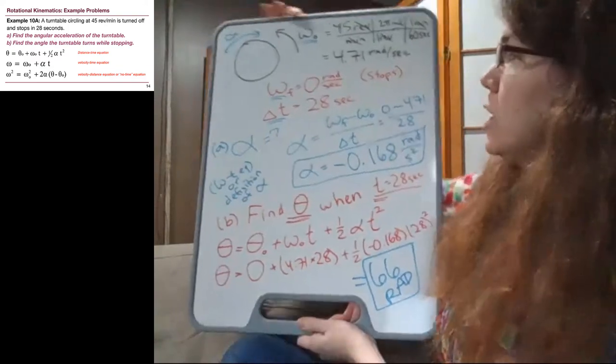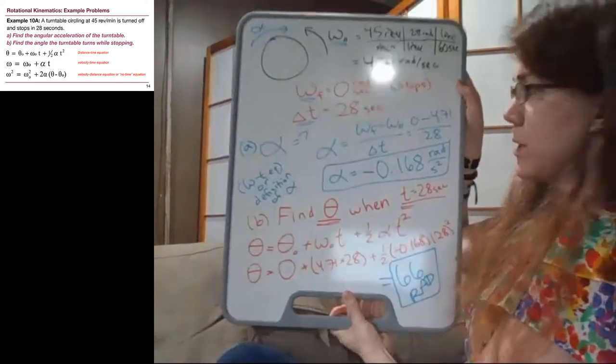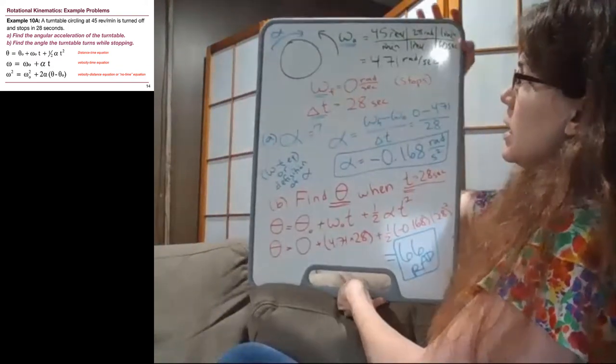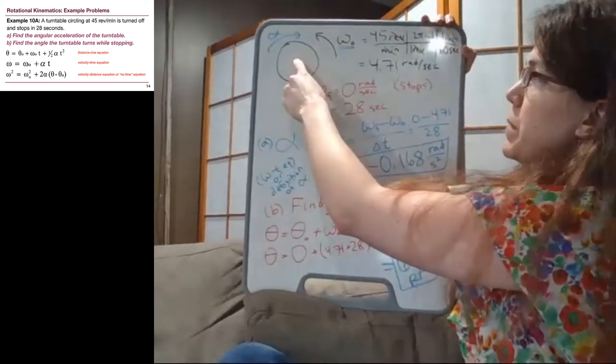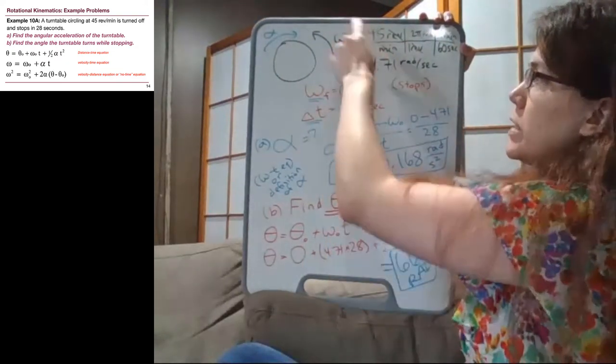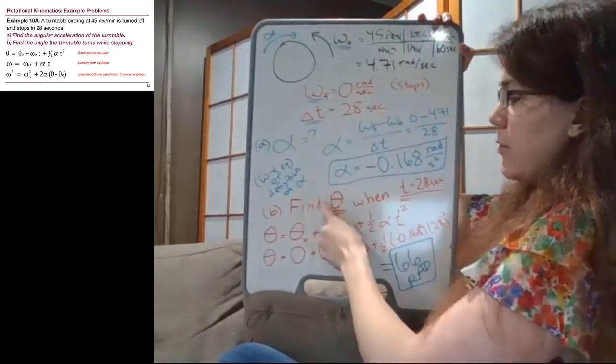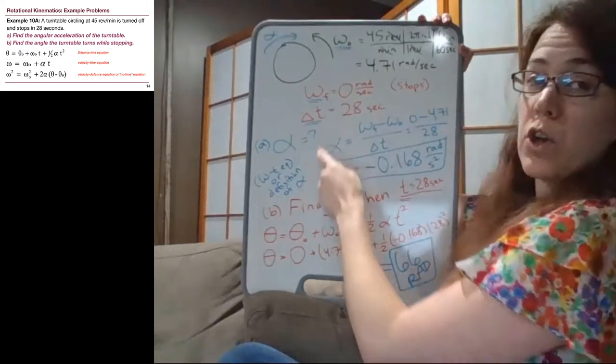So if we look at the flow of the problem, we drew a picture. We listed our given information. We identified in both cases what our unknown was.